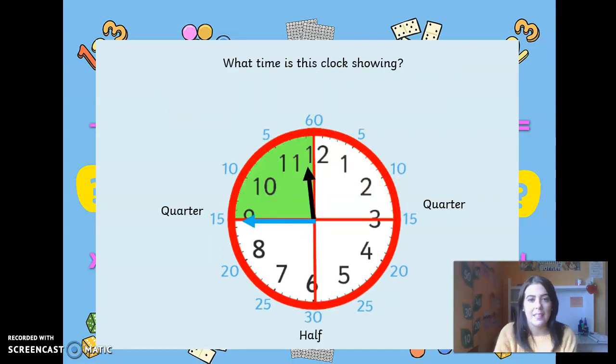What time is this clock showing? See if you can give it a go and guess it. Where is the big hand pointing? I can see the big hand is pointing at quarter. It's quarter to the next hour. So it's pointing at nine.